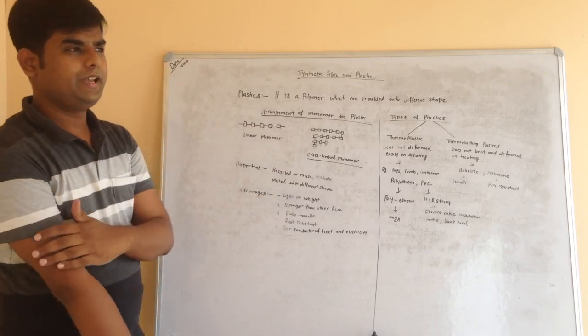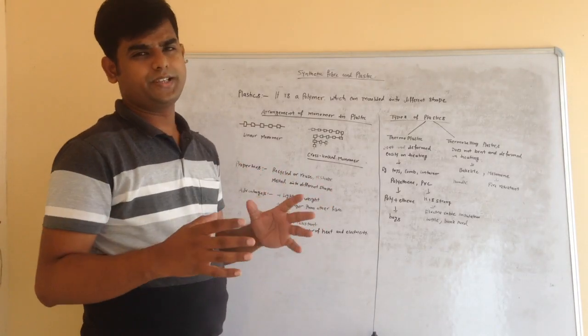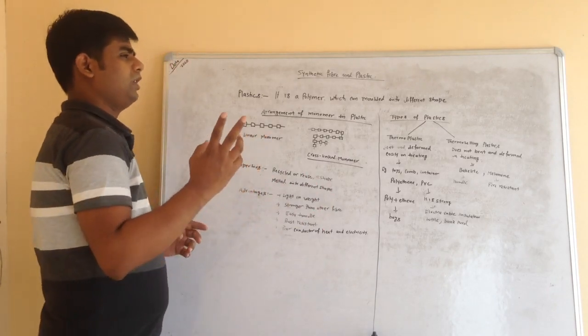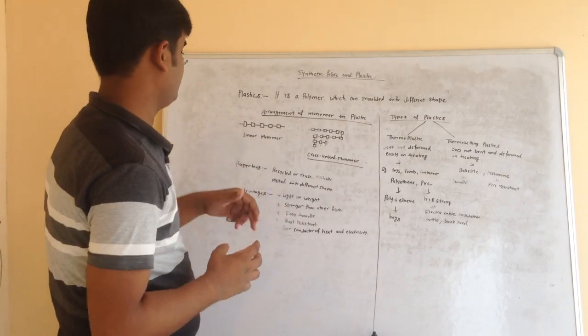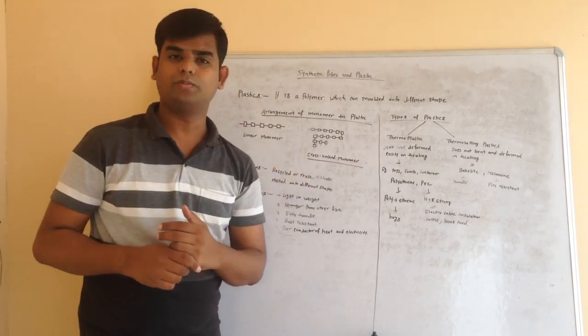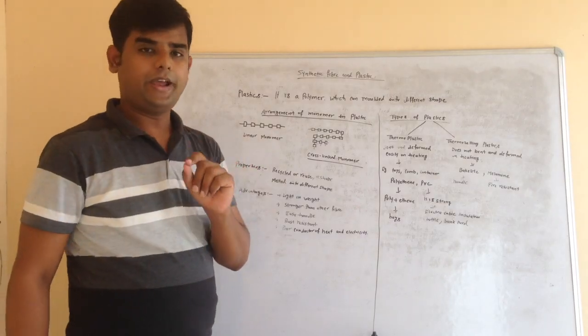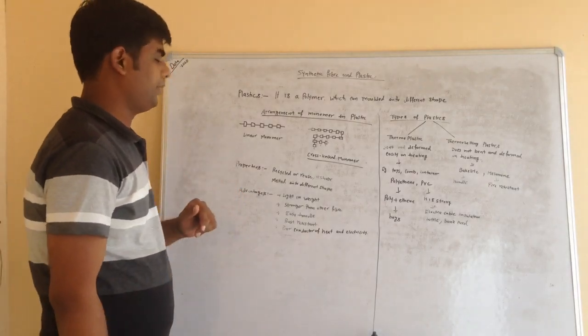Now we talk about monomers in plastics. In plastics, the arrangement of monomers is not same in all plastic. There are two types of arrangement of monomers in plastics in your textbook: linear monomers and cross-linked monomers. Linear monomers is also known as end-to-end linked monomer.